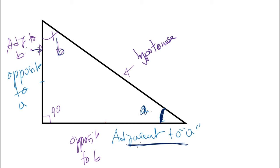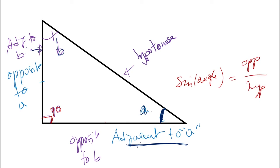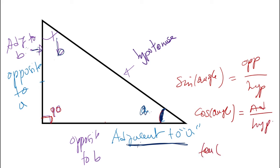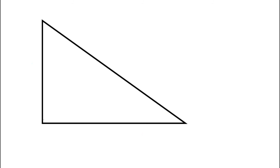We are going to use sine, cosine, and tangent. Remember we have to have a 90-degree triangle. The sine of the angle equals the opposite side over hypotenuse. The cosine of the angle equals the adjacent over hypotenuse. The tangent of the angle equals the opposite over adjacent.